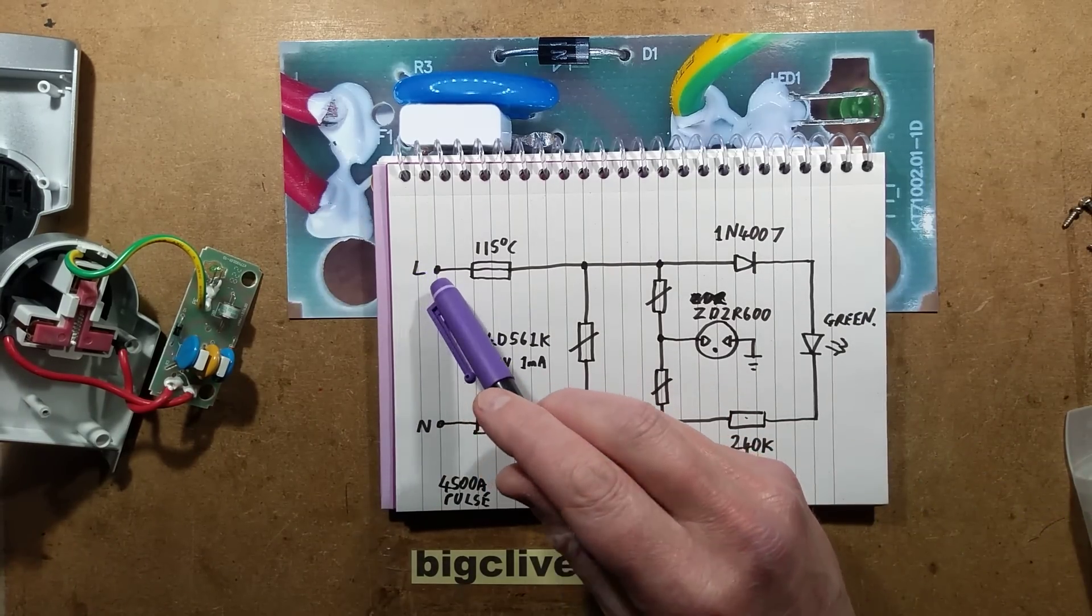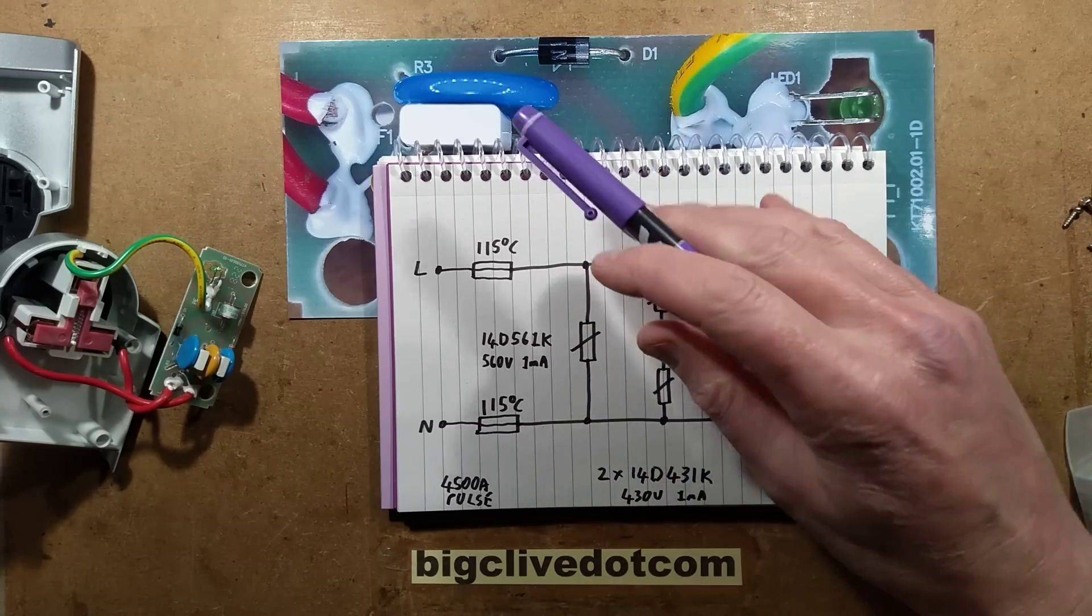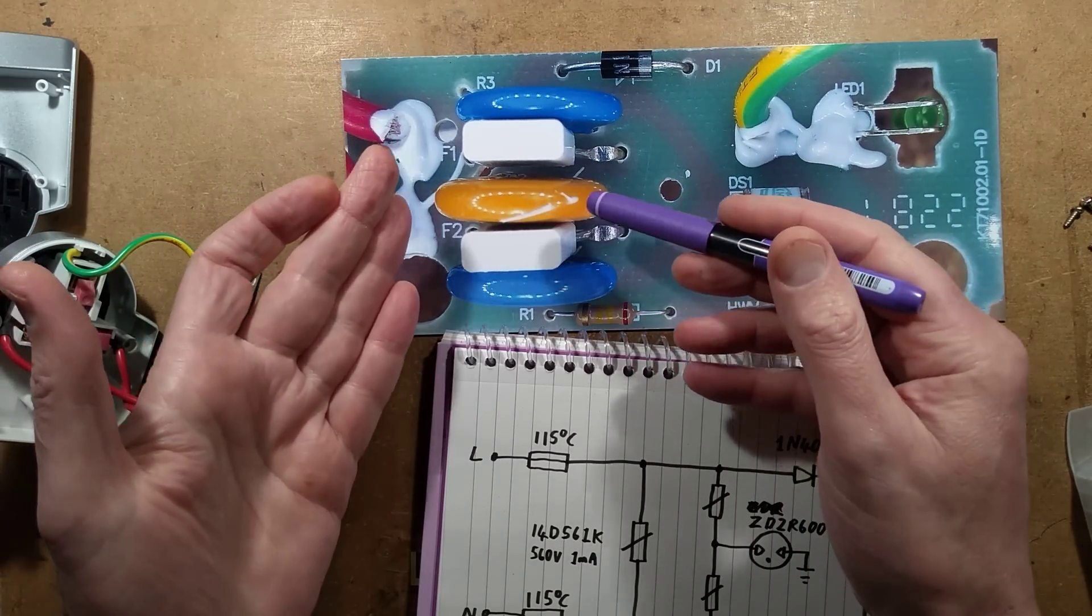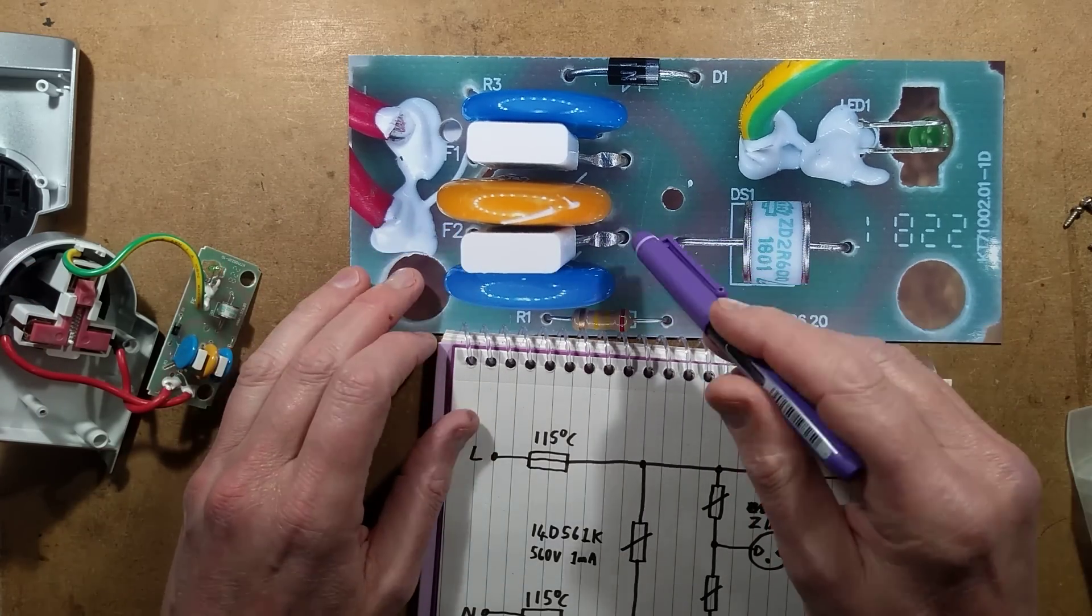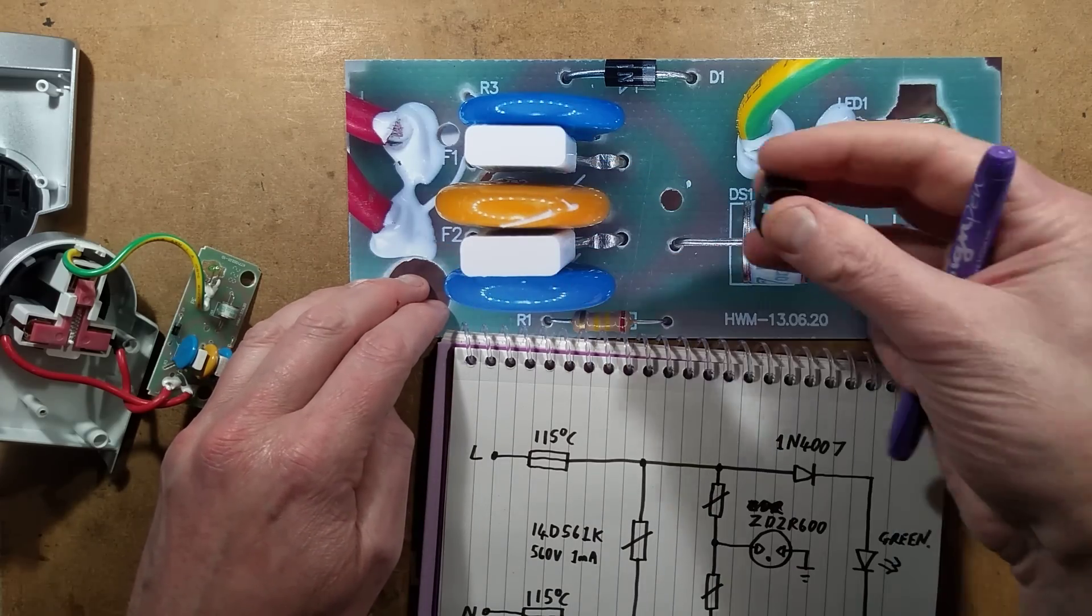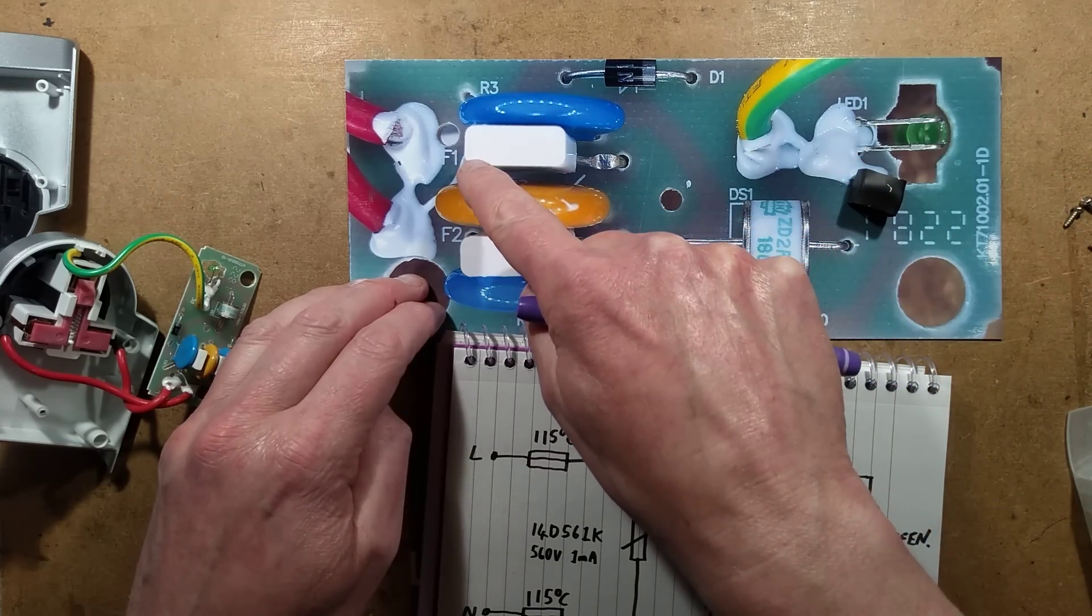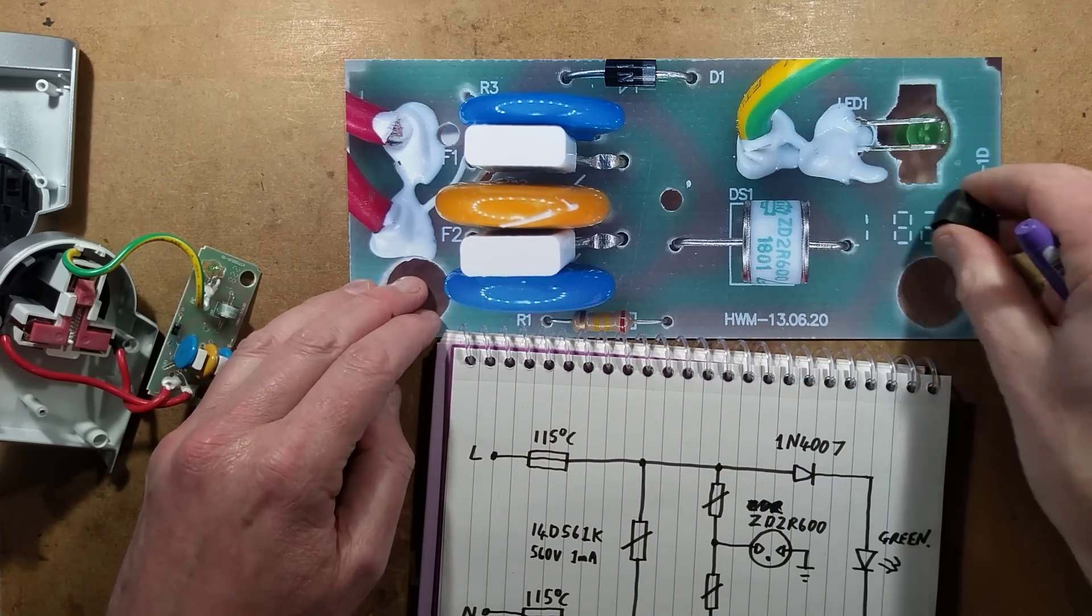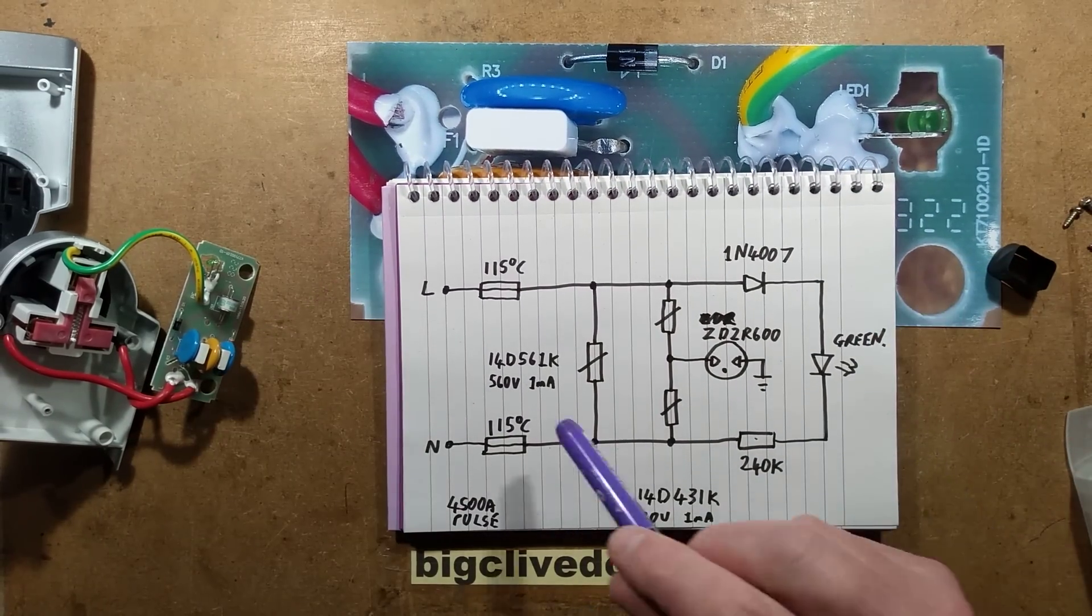So the supply comes in and the first thing that happens is both live and neutral go through those thermal fuses. The reason for that is that these metal oxide varistors here, when they fail they get hot, and if they get too hot then it can cause problems and basically fire which you don't really want. But the main thing is that when these get hot, because they were clumped together with this bit of heat shrink sleeving around them, it means that if any single one of these ones gets hot it will trip the thermal fuse and that will basically cut the circuit out and stop anything going any further. The fuses are actually rated 115 degrees celsius.